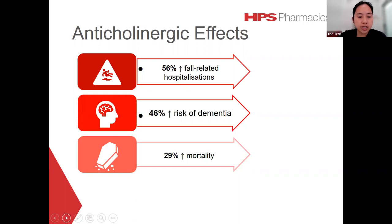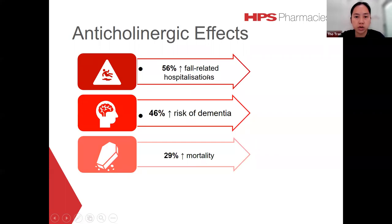One meta-analysis found that use of anticholinergic medication for at least three months was associated with a 46 percent increased risk of dementia compared to non-use. Another large study demonstrated a 56 percent increase in fall-related hospitalizations and a 29 percent increase in mortality in older adults taking anticholinergic drugs.